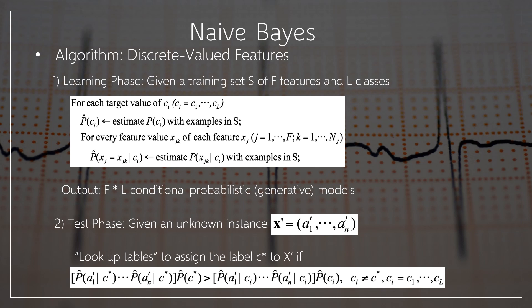The Naïve Bayes algorithm for discrete valued features has two phases. The first phase is the learning phase, where we are given a training set S of F features and L classes.